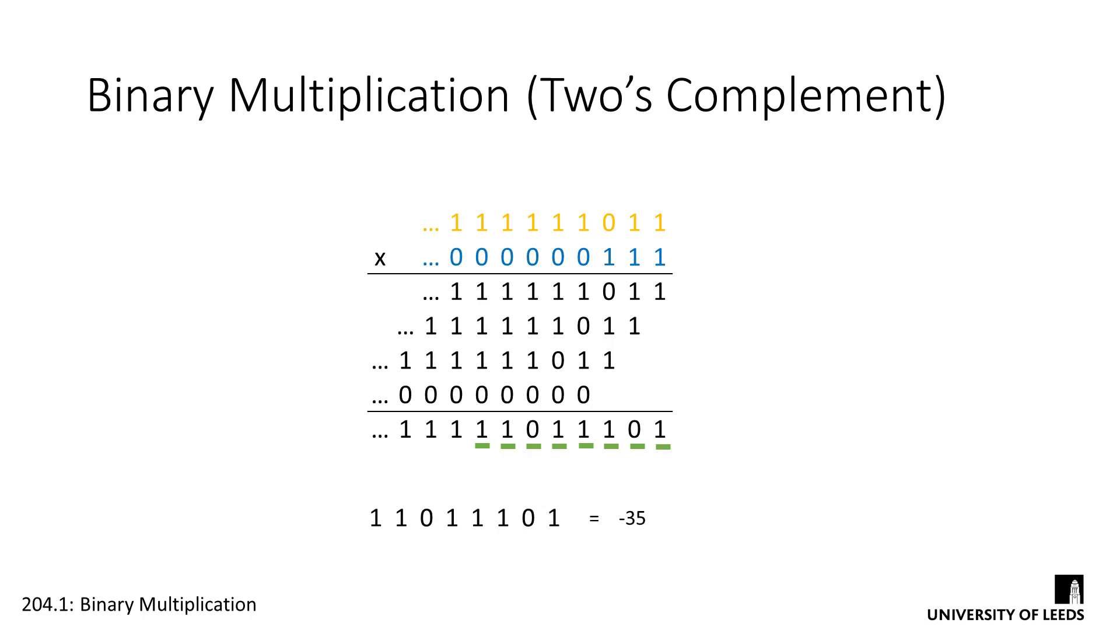Being able to follow a similar methodology in both unsigned and signed means that in theory we could create a single multiplier circuit to handle both unsigned and signed numbers. All we'd need to do is to tell it whether or not to perform the sign extension.